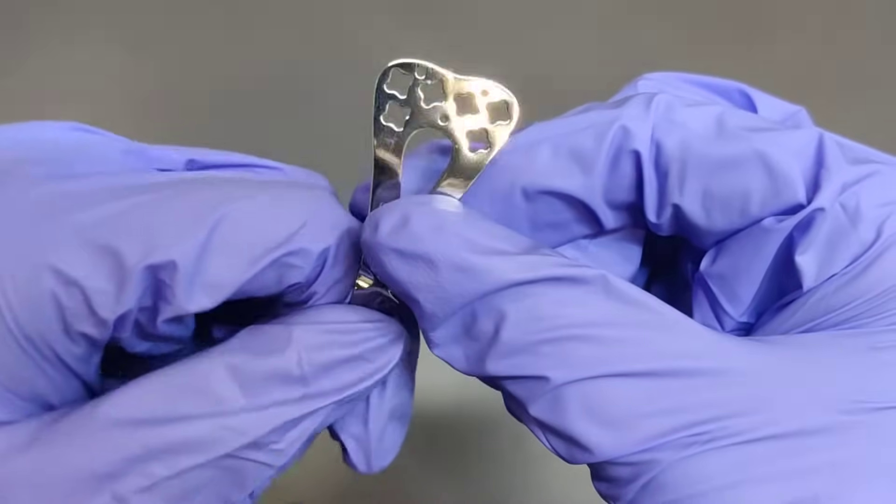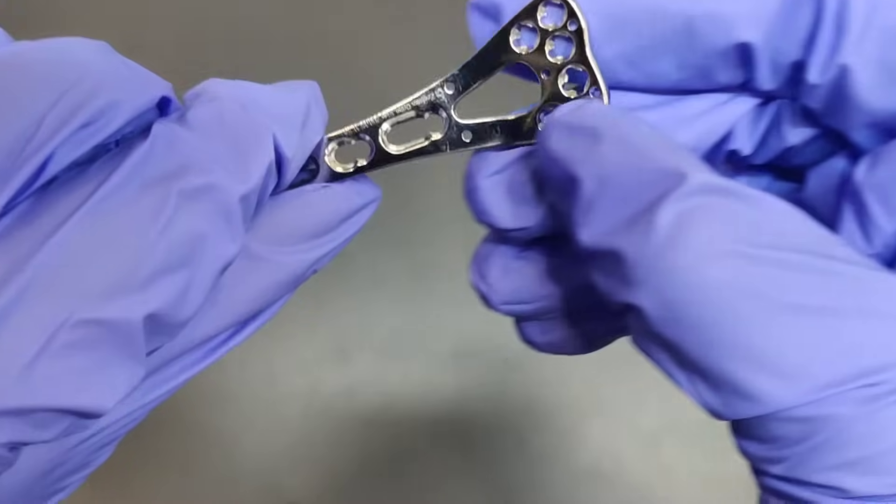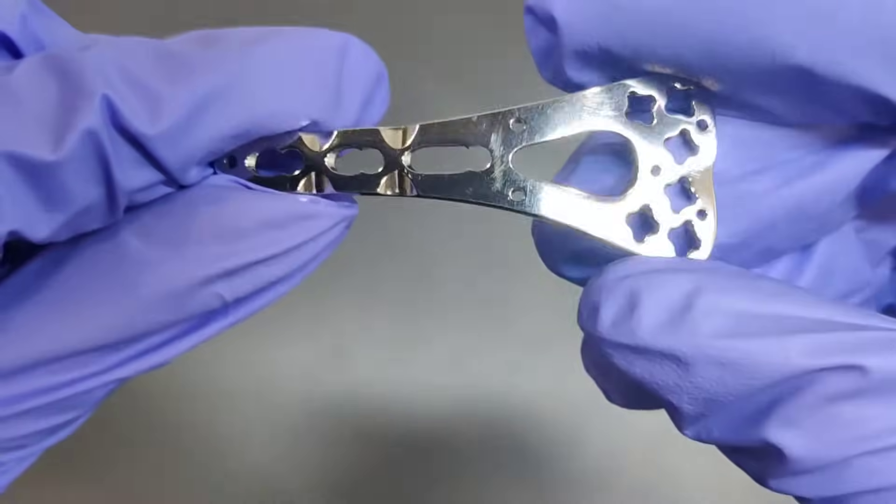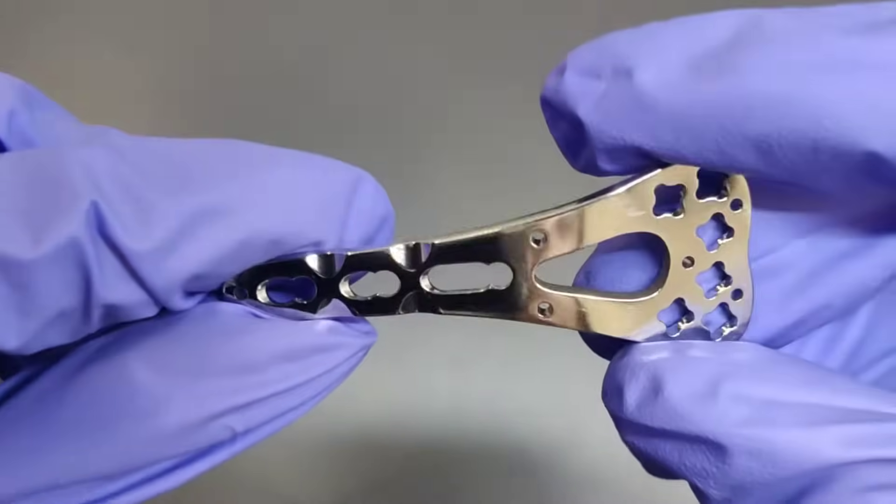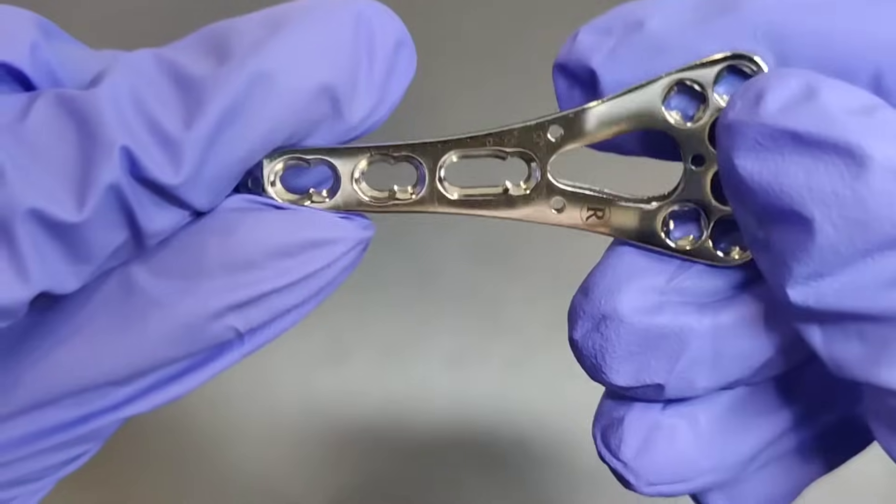Enhancing stability and support, the plates incorporate specialized screw holes tailored for fixation of the radial styloid, lunate facet and distal radio-ulnar joint.